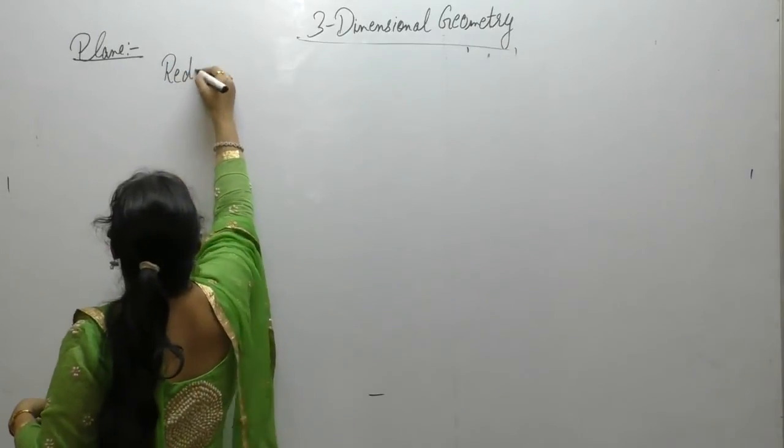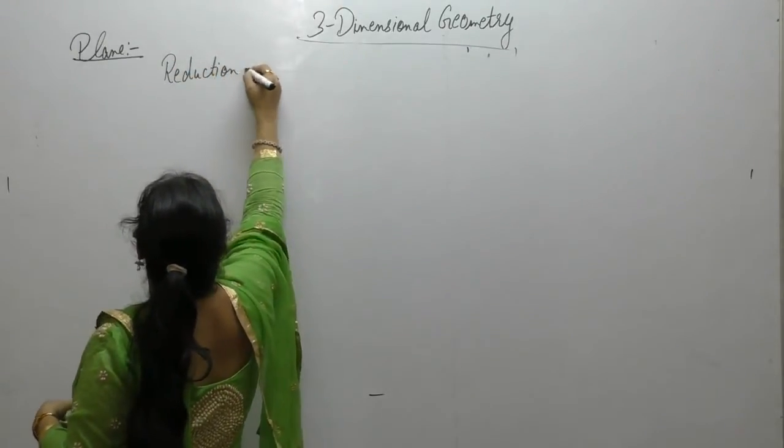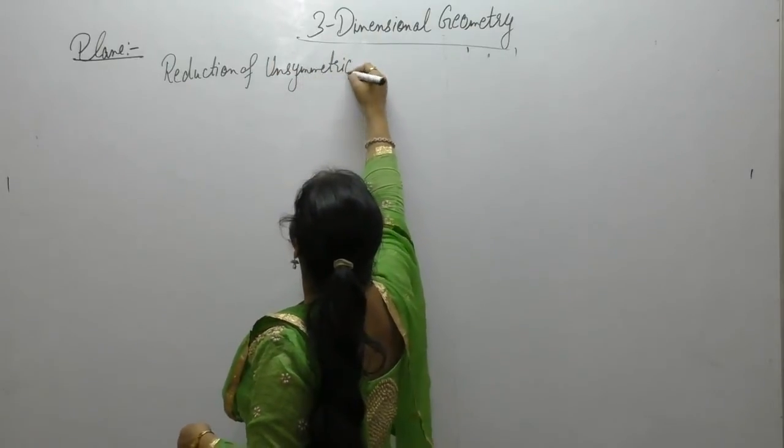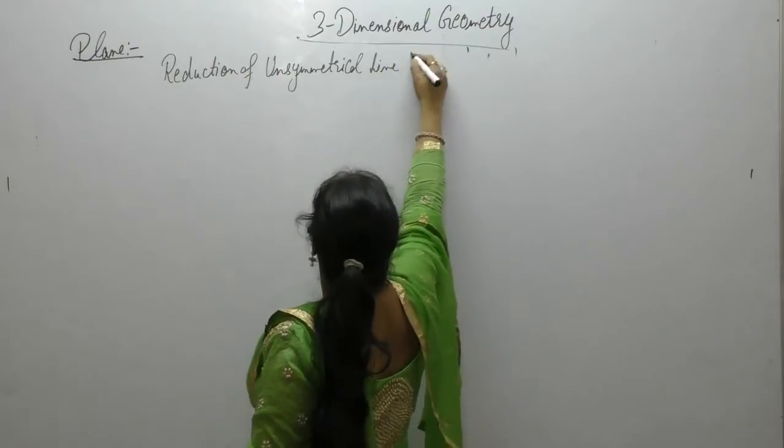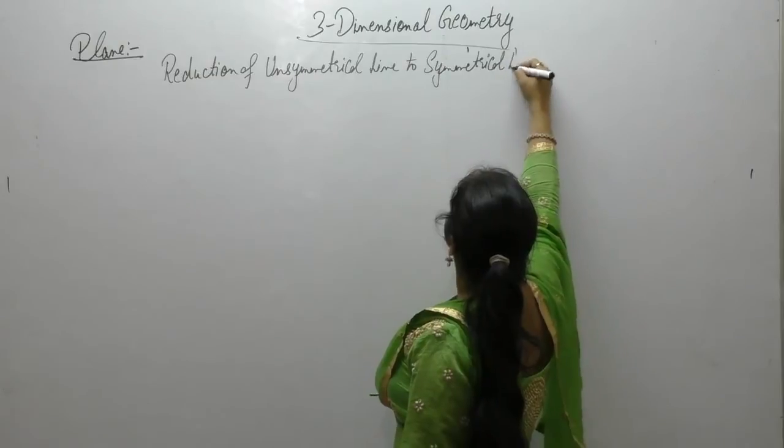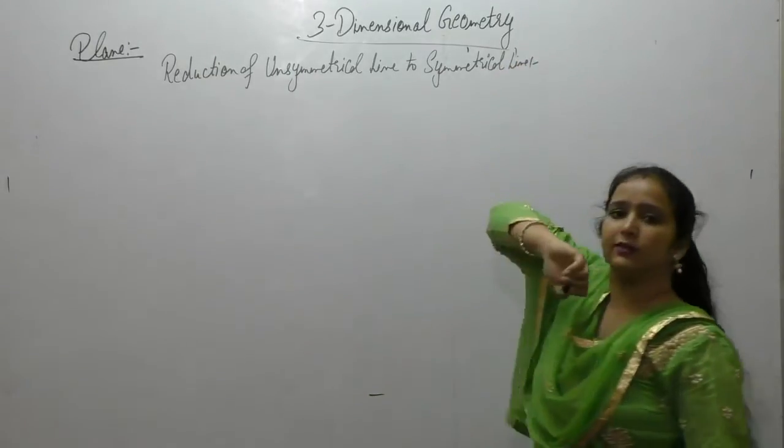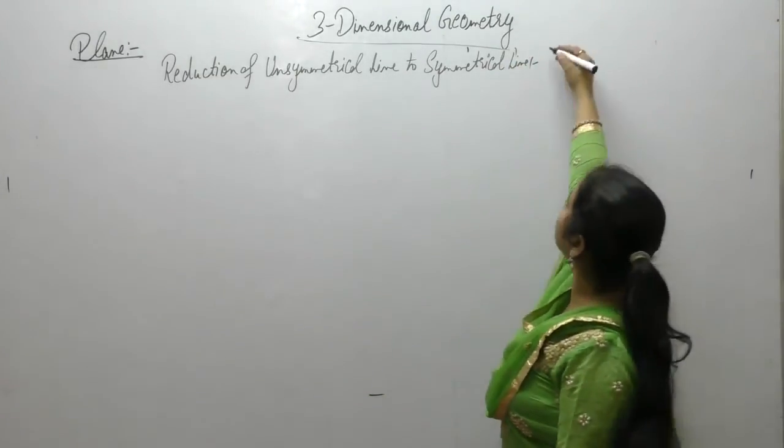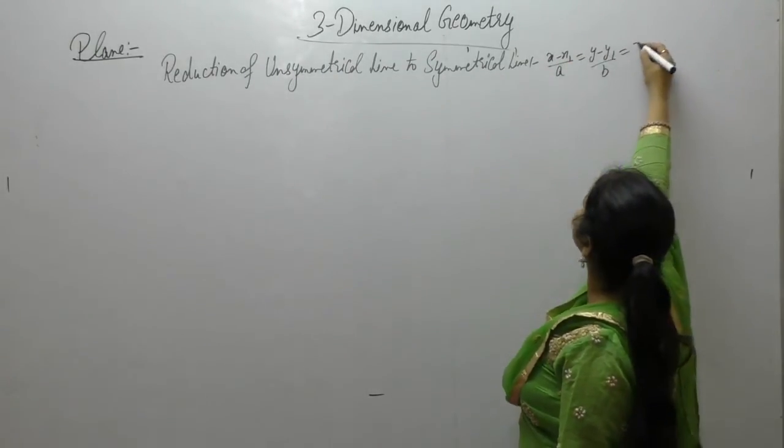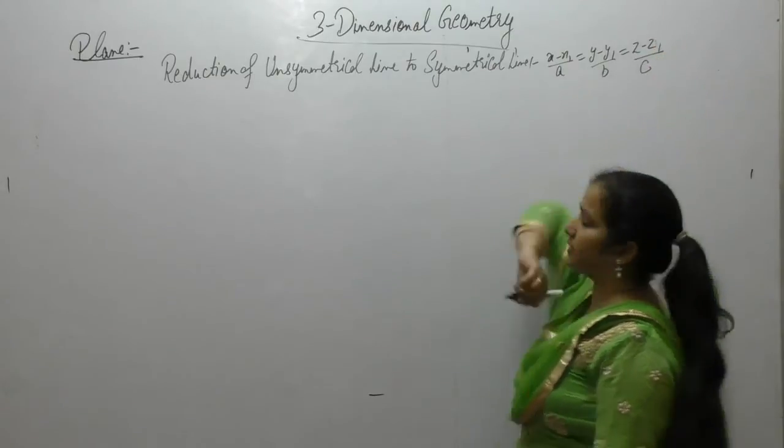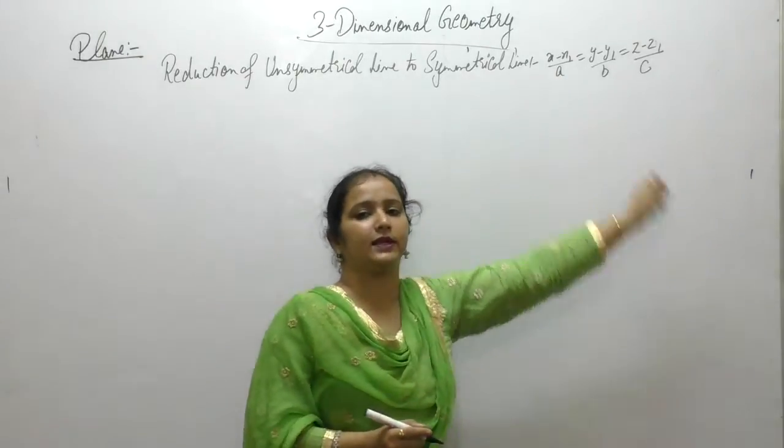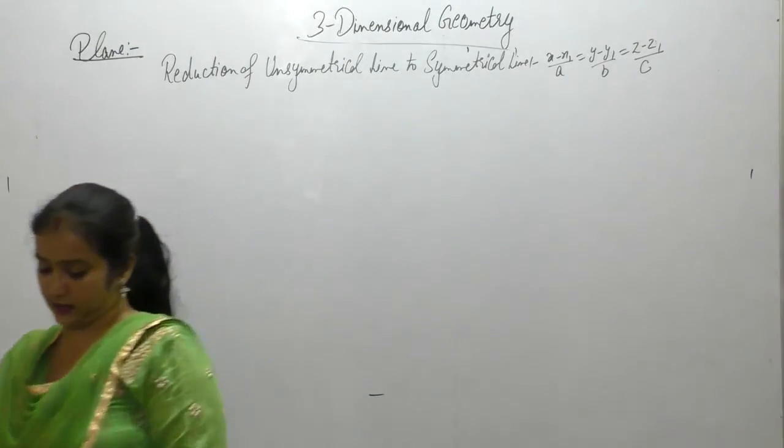This is reduction of unsymmetrical line to symmetrical line. We know the general form of the line is, general equation of the line is of the type x minus x1 point minus y1 and z minus z1 point c. हमें line की equation किसी भी form में given है, हमें उसे symmetrical form में convert करना है. So, let us start.